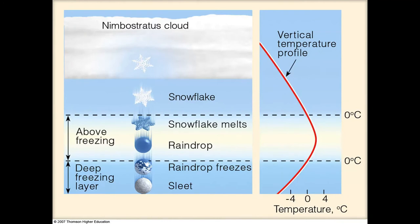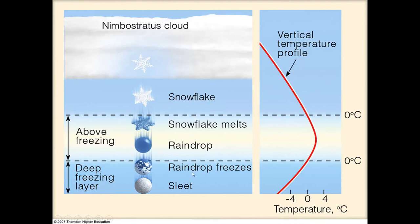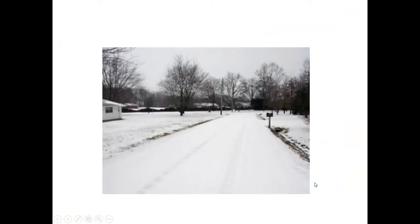So the way sleet works: snowflakes fall out of a cloud, enter the shallow warm layer above the surface where they melt, and then as they fall further down they freeze again into sleet. Here's an image of a sleet-covered area — it kind of looks like snow, but the pellets are really tiny. I actually got to experience sleet for my very first time just two years ago, and it was incredible.